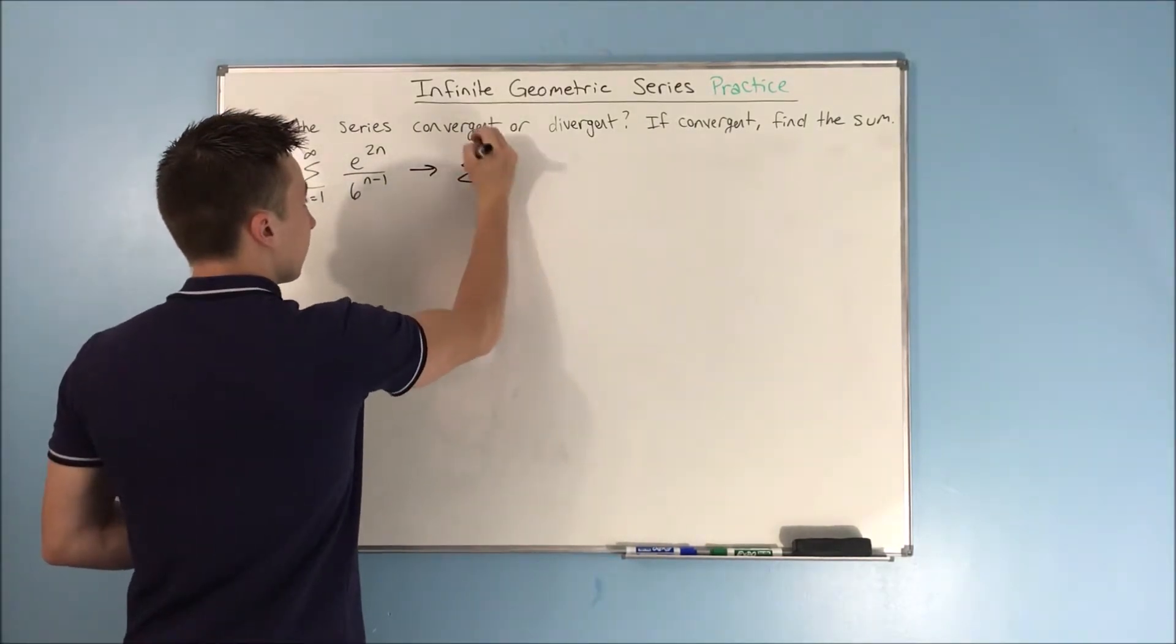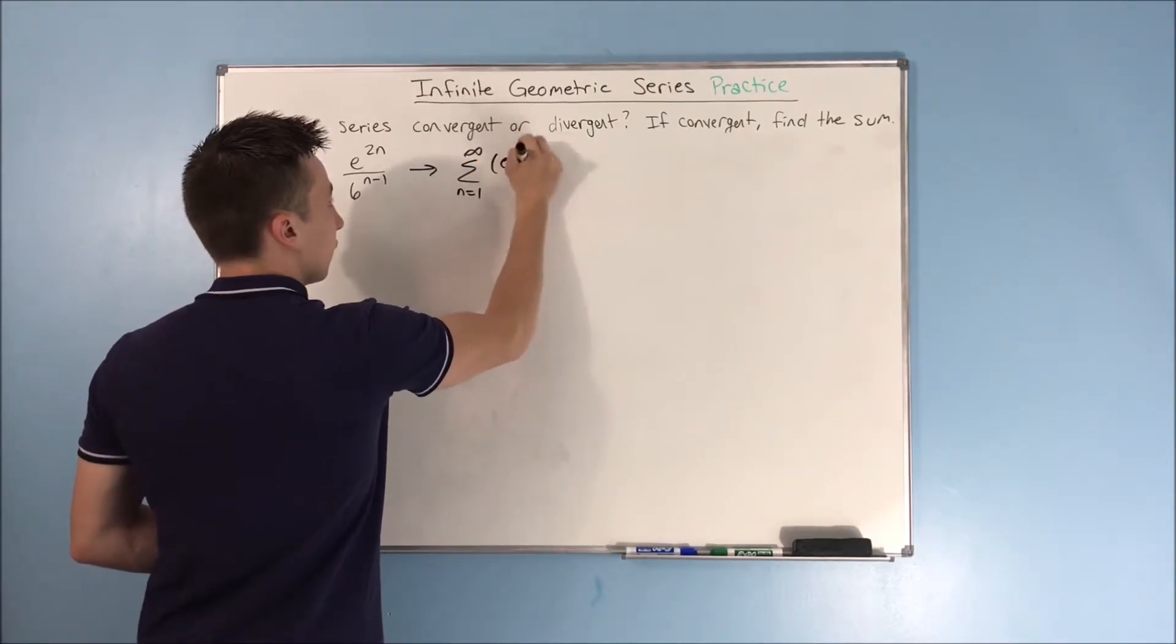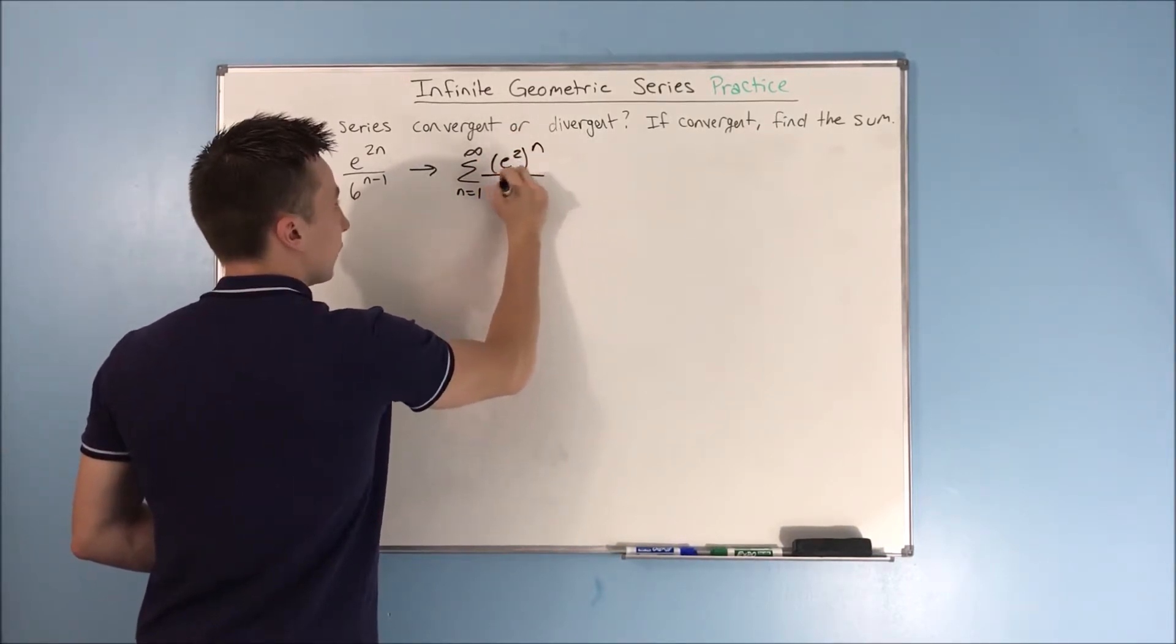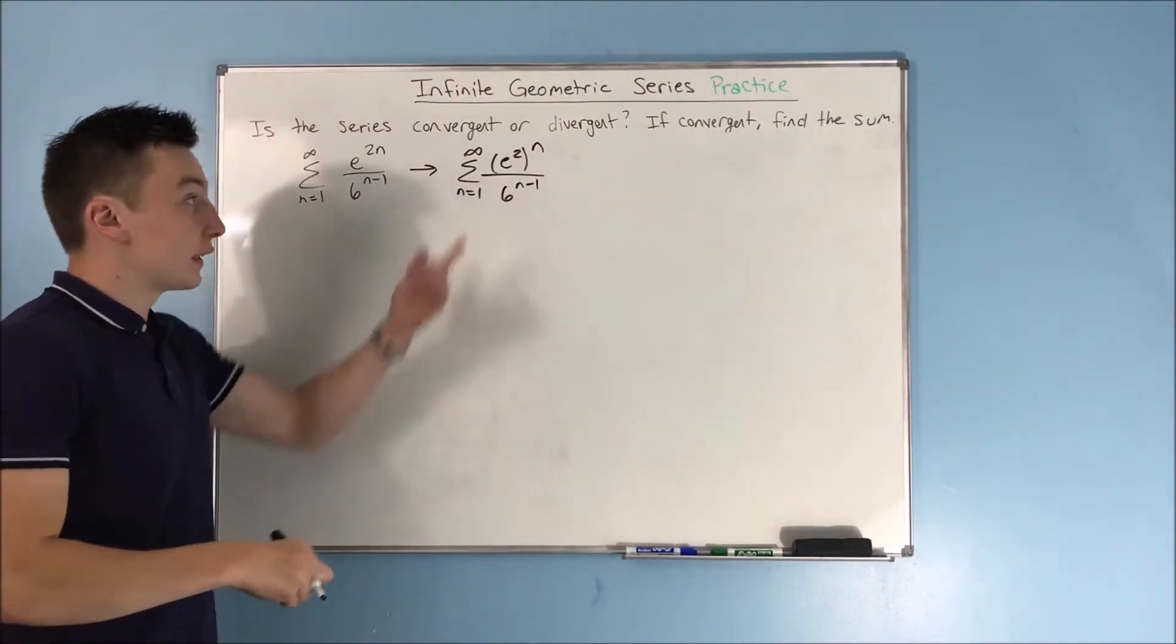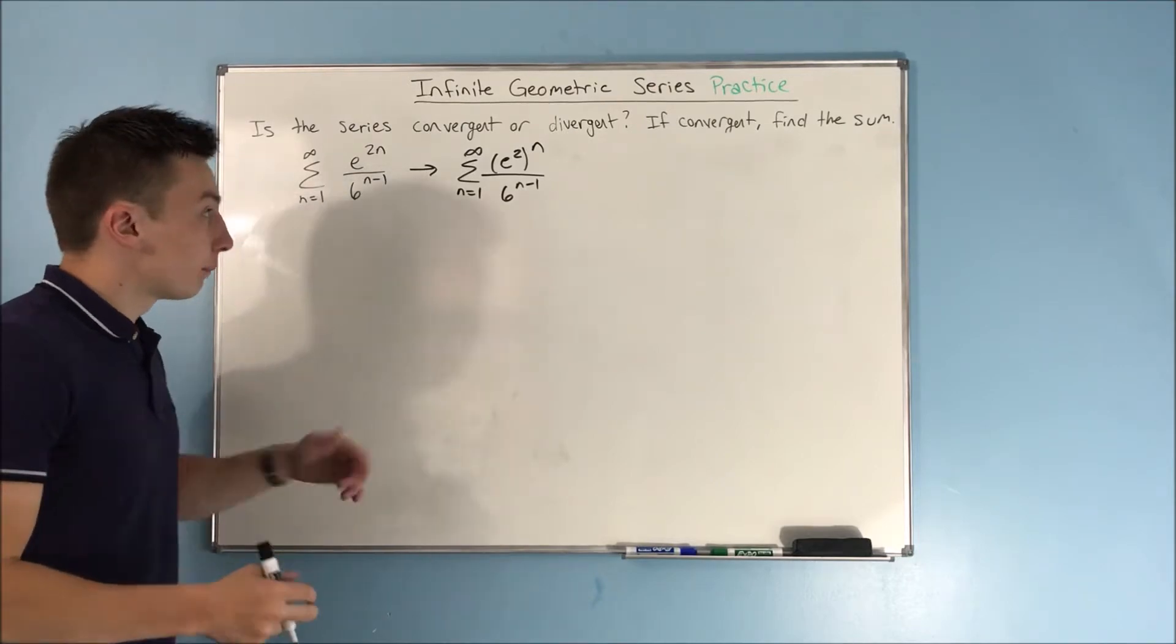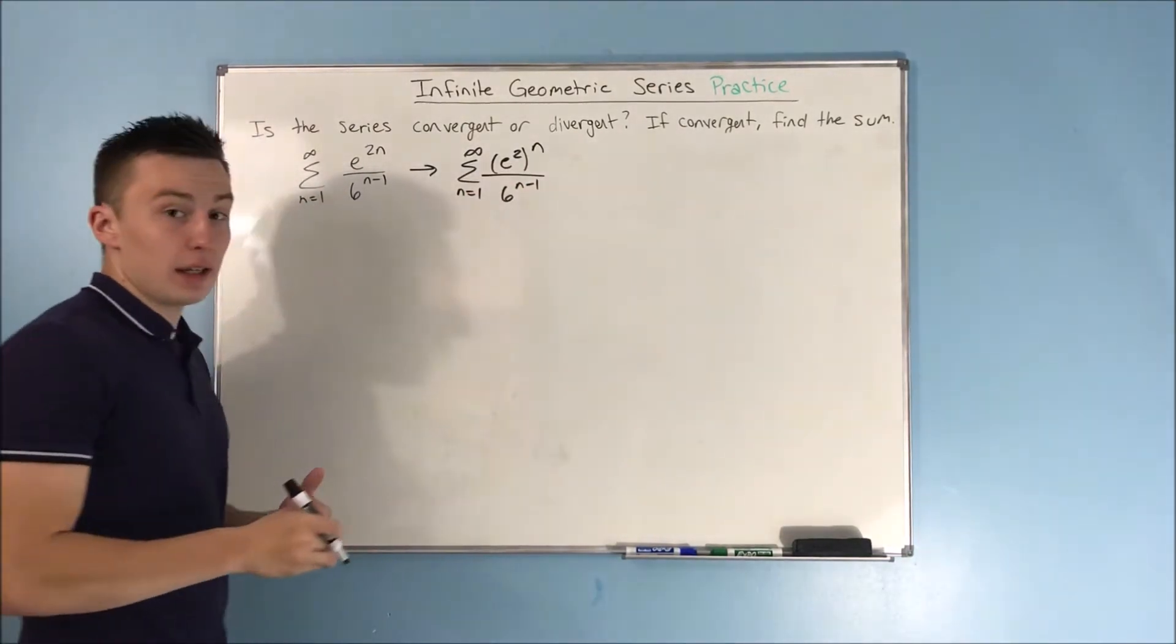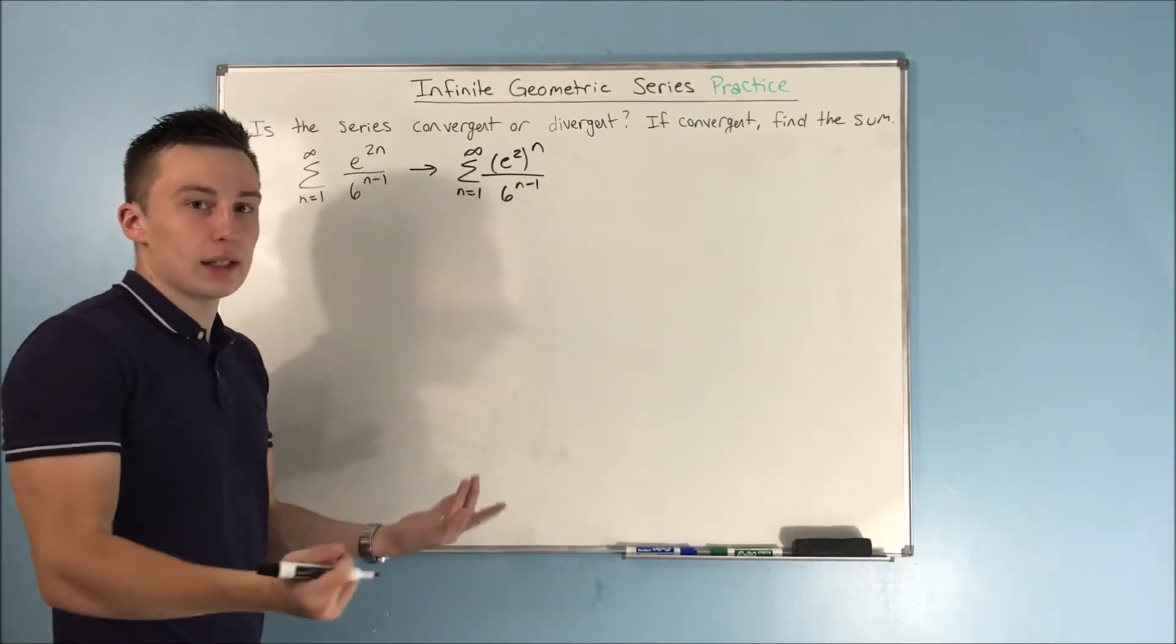And we can do that by rewriting this as the sum from n equals 1 to infinity of e squared to the n power over 6 to the n minus 1. This is still e to the 2n, I just kind of separated it. Now, you'll see here that we have the same exact thing as we did in the last problem. We have a constant, e squared is a constant,